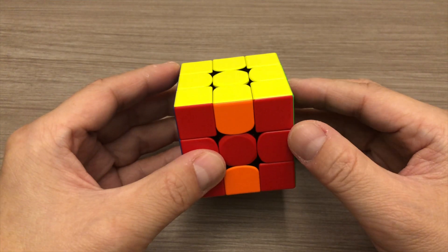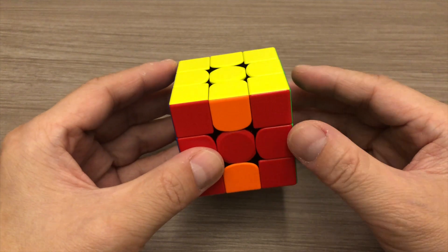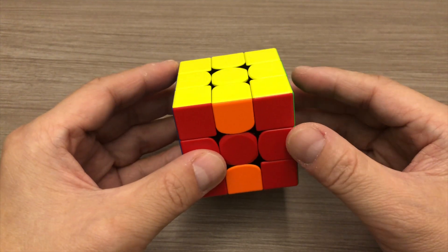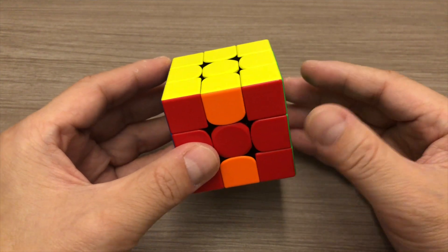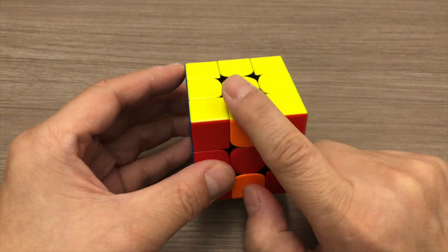At this stage, you are 1 or 2 algorithms away from solving your entire cube. In order to apply the correct algorithm, you must be able to identify the pattern on the M slice layer.